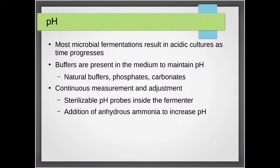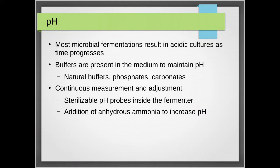The first parameter to consider is pH. Most microbial fermentations result in acidic cultures as time progresses. Your media contains buffers — in microbiology, phosphate buffers are commonly used. Natural buffers include phosphates and carbonates, and they help maintain your pH. There is always continuous pH monitoring throughout the fermentation process. Sometimes you get a sample from the fermenter each day, or you have a pH electrode inside as a sensor. To help maintain pH, you usually add ammonia, since the pH is decreasing — becoming more acidic — so you add bases to control it.